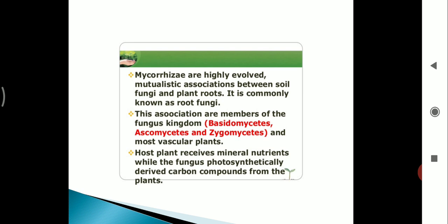It is commonly known as root fungi. These associations are members of the fungus kingdom: basidiomycetes, ascomycetes, and zygomycetes, and most vascular plants. Host plants receive mineral nutrients while the fungus receives photosynthetically derived carbon compounds from the plant.